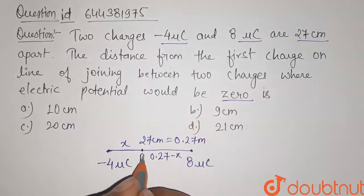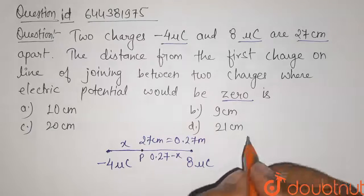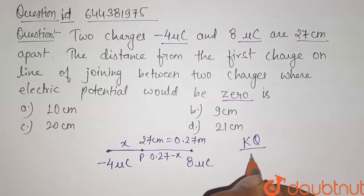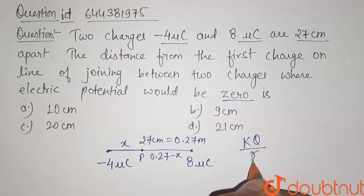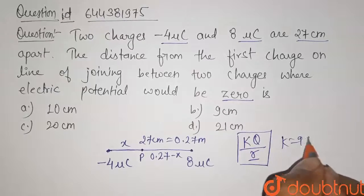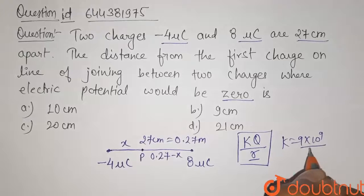Now let us write the potential at this point P. So potential is given by k into q divided by r. Here q is the charge and r is the distance and k is a constant. The value of k is 9 into 10 to the power 9.